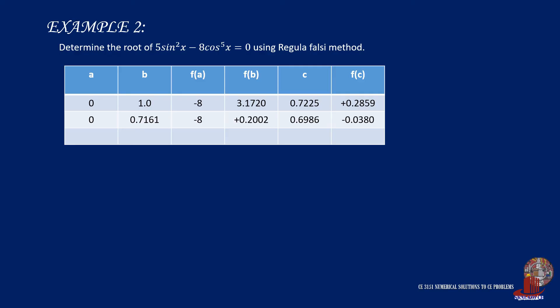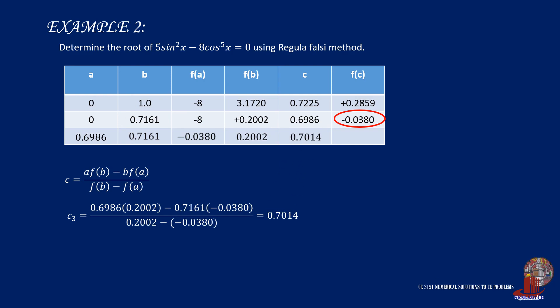Let's move on to the third iteration, and based from the sign of the function c, which is negative, we replace the lower limit with 0.6986, and the new function of a is -0.038. The upper limit b is still 0.7161 with its function as positive 0.2002. Complete the row by taking c sub 3 as 0.7014, and take the function by plugging this value in the equation, and it would result to positive 0.00044. With the function of c as very near 0, we can stop iteration, but instructions might require more decimal places. In this example, we can take the approximate root of x as 0.7014.